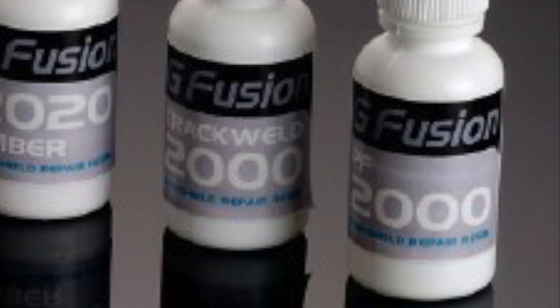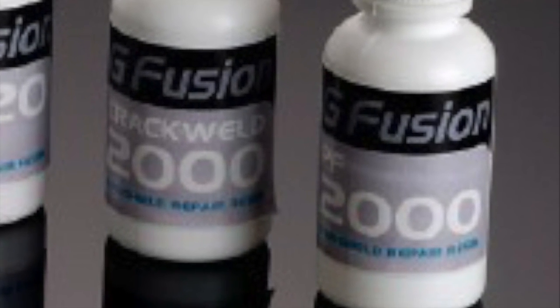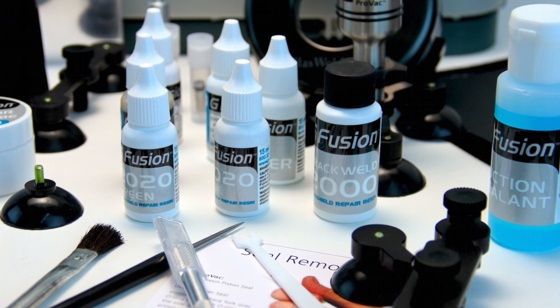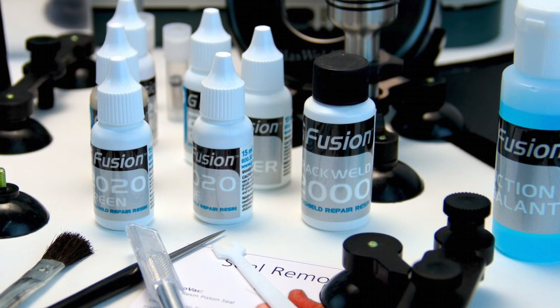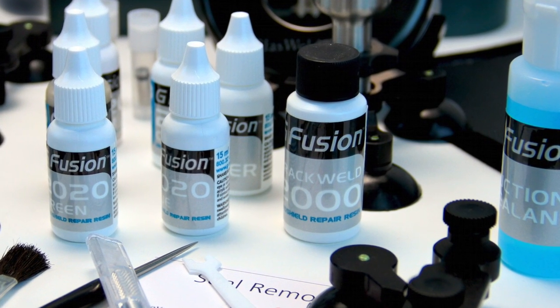Crackweld 2000 is a little bit thicker and while it may take a little longer to fill, it allows for better resin adhesion especially in climates where there are drastic temperature changes.